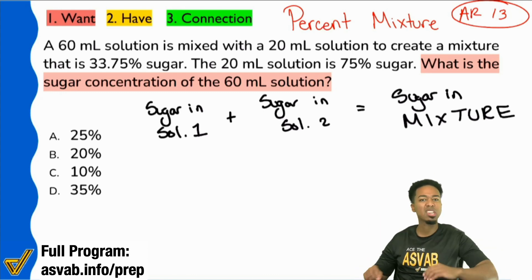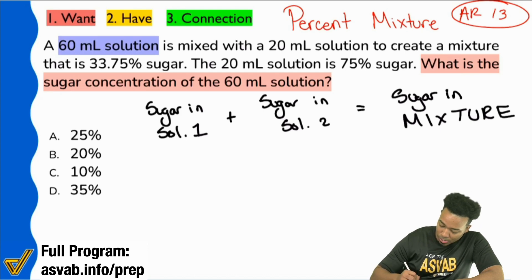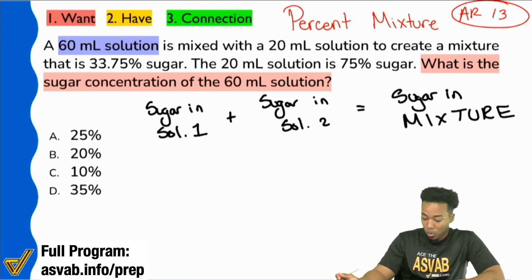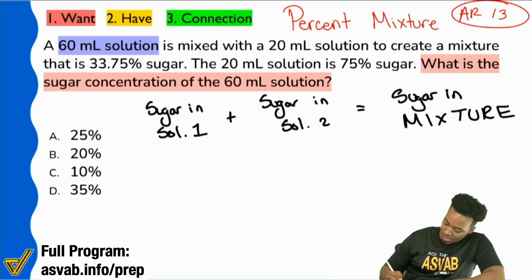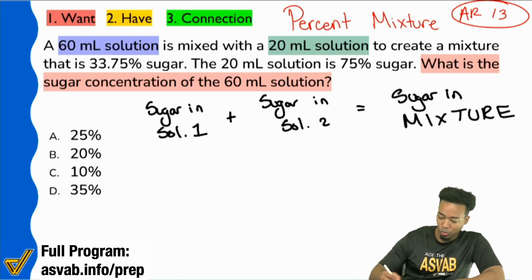So notice that we're still playing off of the same two facts. One, the fact that we all know is true about percents, and the other one, a fact that we needed for this question, a very obvious fact, but one that we needed to remind ourselves of in terms of this plus this equals the mixture. So now that we know that, watch, same exact details. We'll go ahead with part one. We see that it says a 60 milliliter solution is mixed with a 20 milliliter solution to create a mixture that is 33.75% sugar.